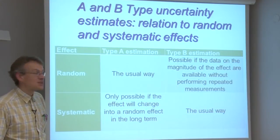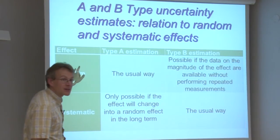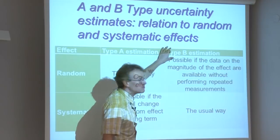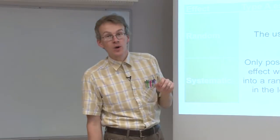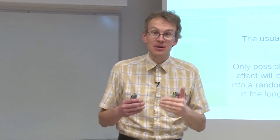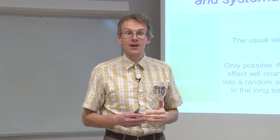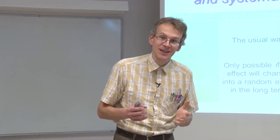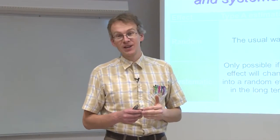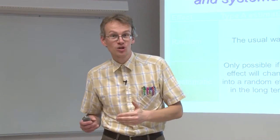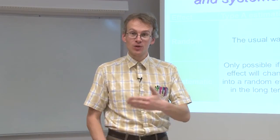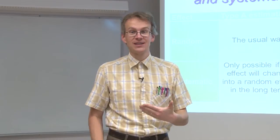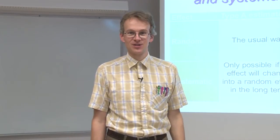Now, random effects can also sometimes be evaluated by type B estimations. And these are all those cases where we do not have the separate measurement data, but we have either some summary characteristics or we get the data from some data source which does not provide to us the original data, but only the eventual findings, the eventual uncertainty estimate.